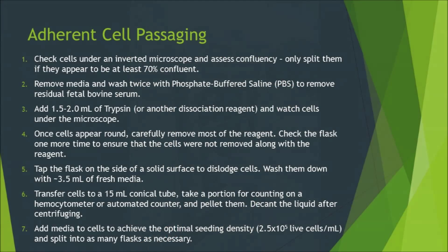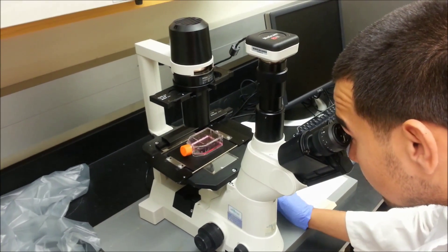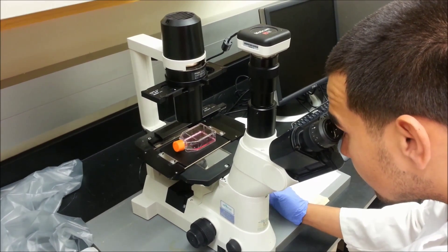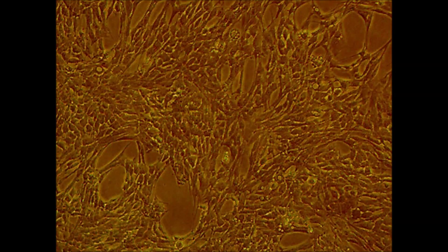Feel free to pause the video and take note of the step-by-step instructions for adherent cell passaging, but we will discuss these steps as we demonstrate the technique. Begin by checking the confluency of your cells under an inverted microscope. For adherent cells, they should look something like this when they are ready to be passaged.